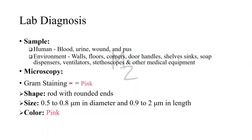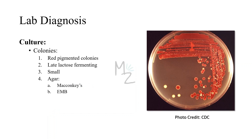Samples can also be taken from non-living surfaces such as walls, floors, corners, door handles, stethoscopes, and other medical equipment, since these may harbor S. marcescens. On gram staining, the organism appears gram-negative and pink, rod-shaped with rounded ends, ranging from 0.5–0.8 µm in diameter and 0.9–2 µm in length. On culture, Serratia marcescens produces red-pigmented, small, round colonies. It is a late lactose fermenter. The agar used is MacConkey or EMB agar.